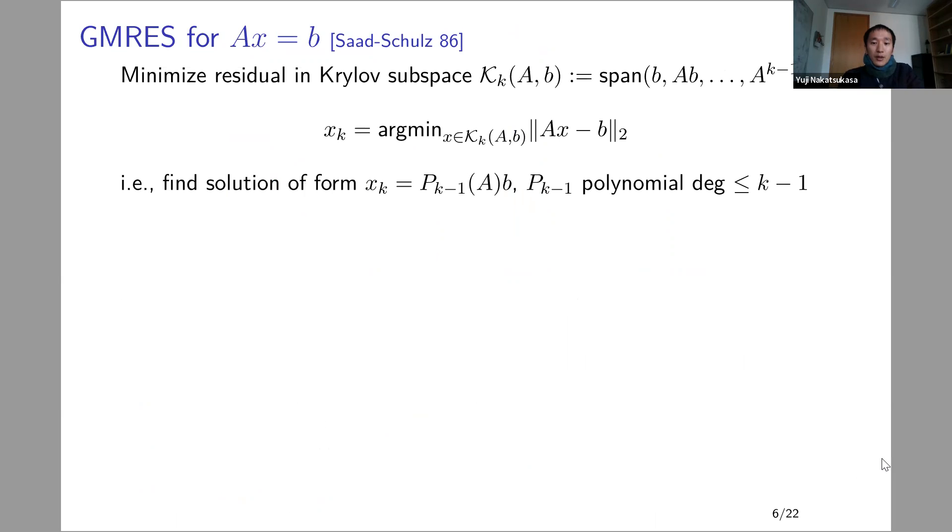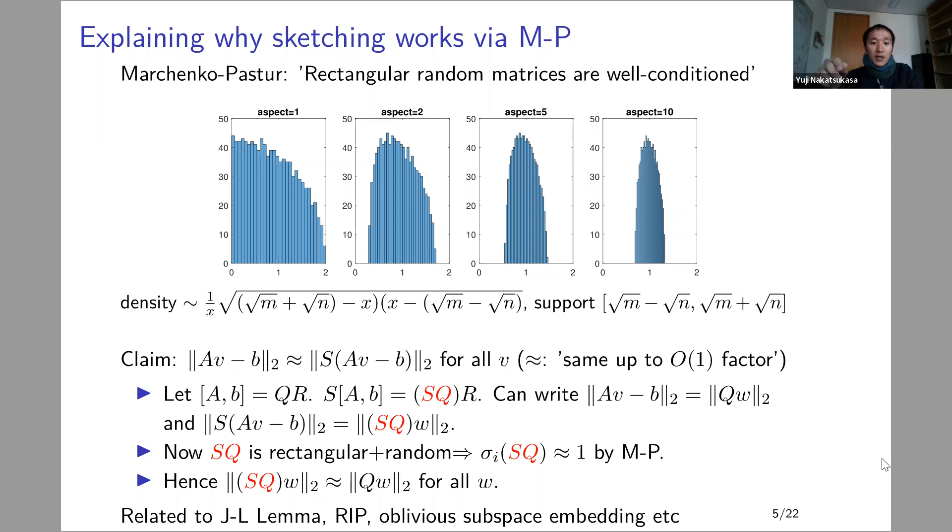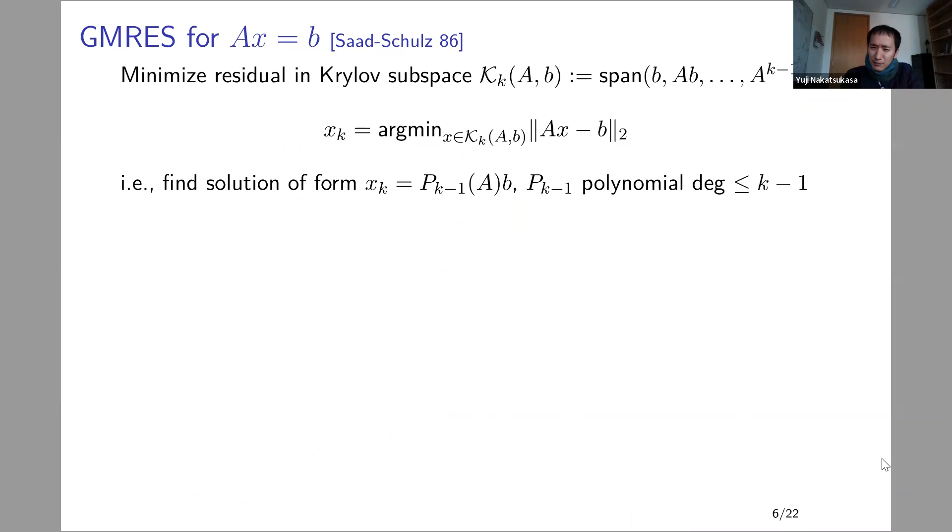All this was talking about reducing the dimension of a very tall-skinny least squares problem. One might argue that, well, that's very nice, but it sounds rather artificial. When do you actually have a very tall-skinny least squares problem? When that happens, you could argue, did you just sample too many data points? Maybe you could have just sampled less and got away with it, which is a good point. But I'll try to argue that such a situation actually arises very naturally in the context of solving a linear system for a square matrix using GMRES.